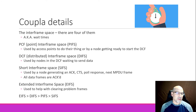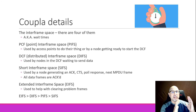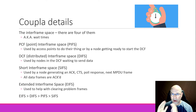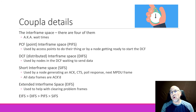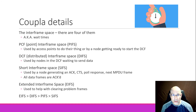I've mentioned a couple times in these videos the inter-frame space. There are actually four of them. Another way to think about inter-frame space is a wait time — if I send out a frame, I can't just send another one right after it. I have to wait. That time period, or bit intervals that I have to wait, is called the inter-frame gap or inter-frame space. In wireless networks, we have four of them. Ethernet only has one.